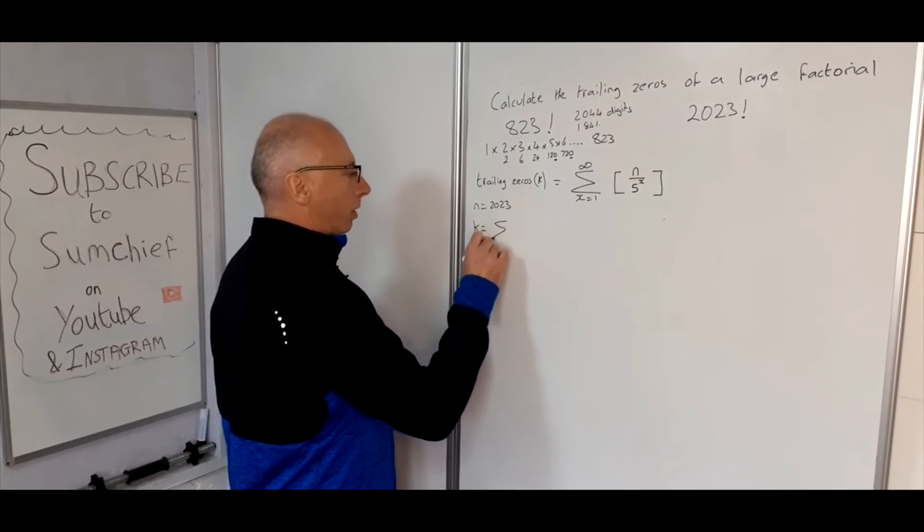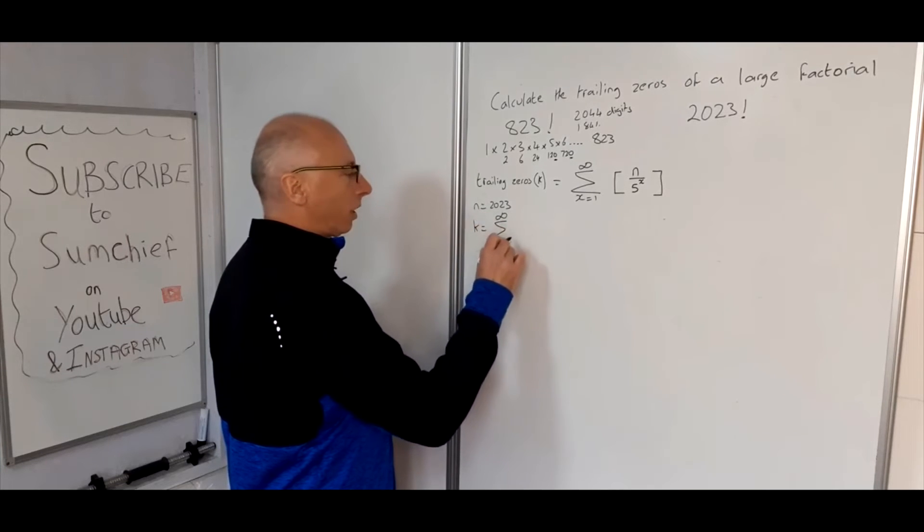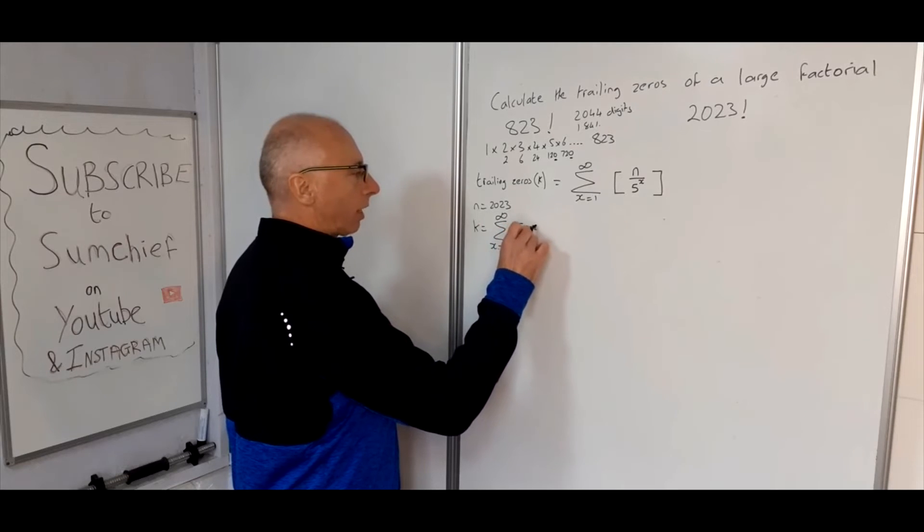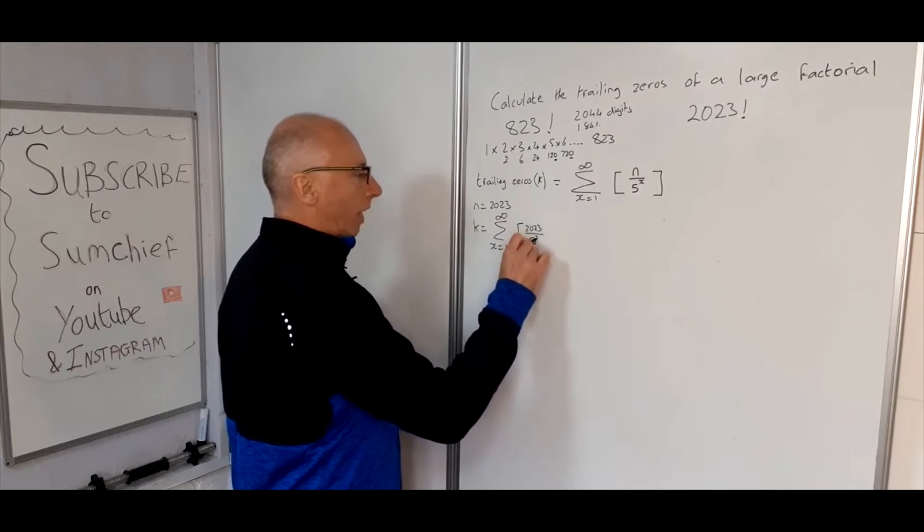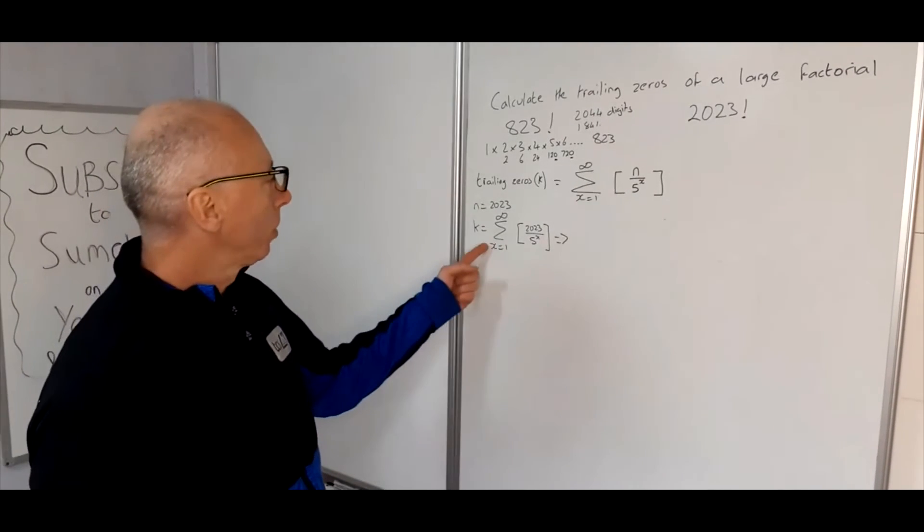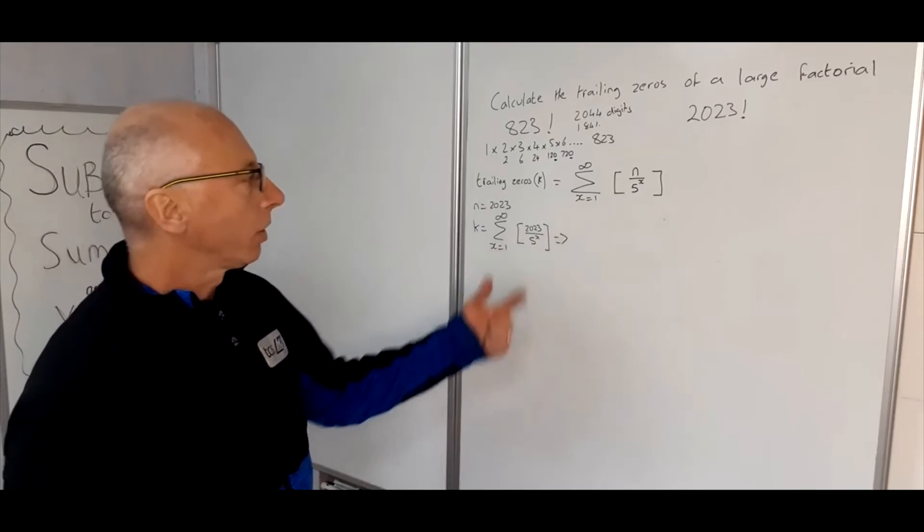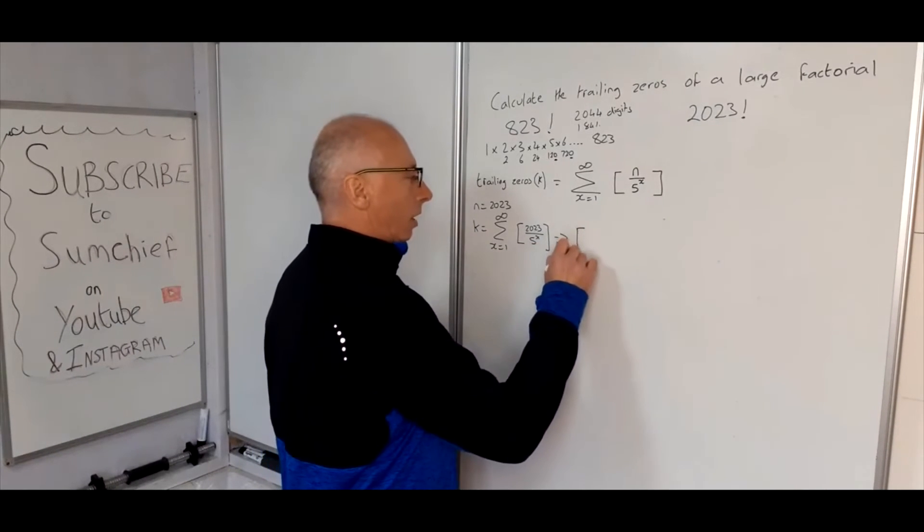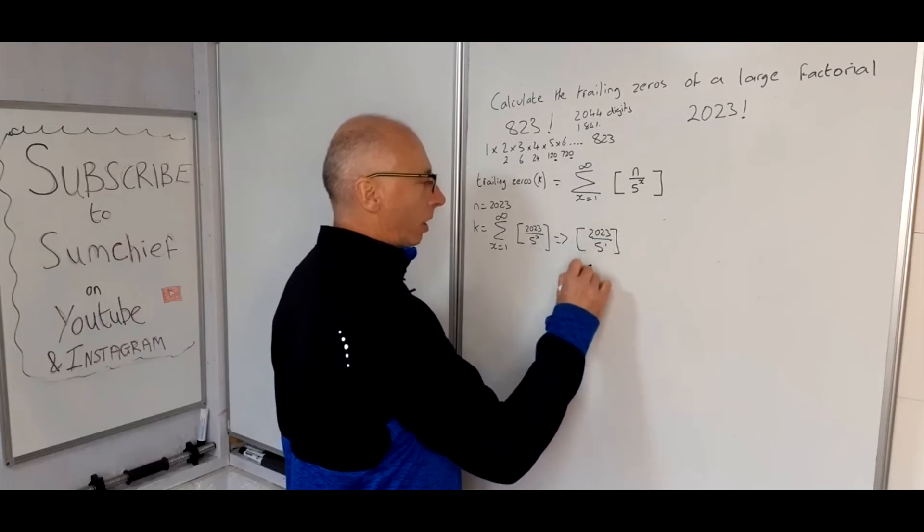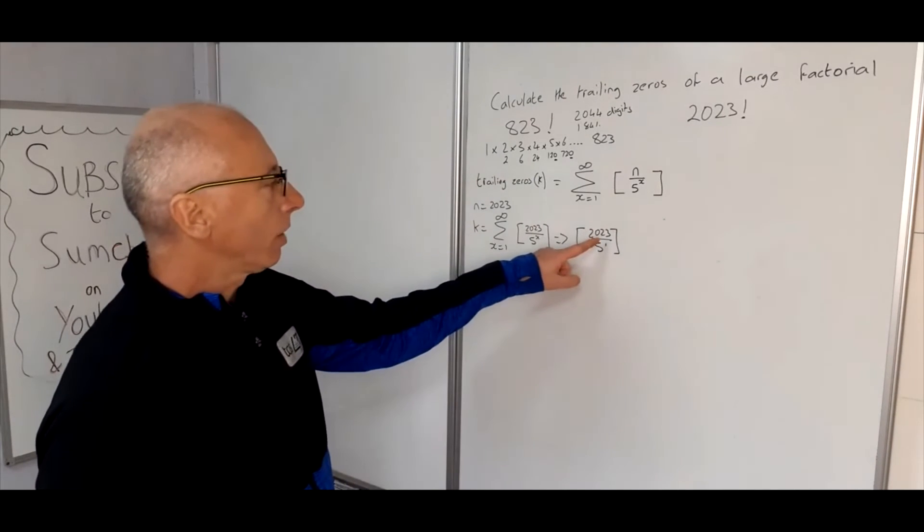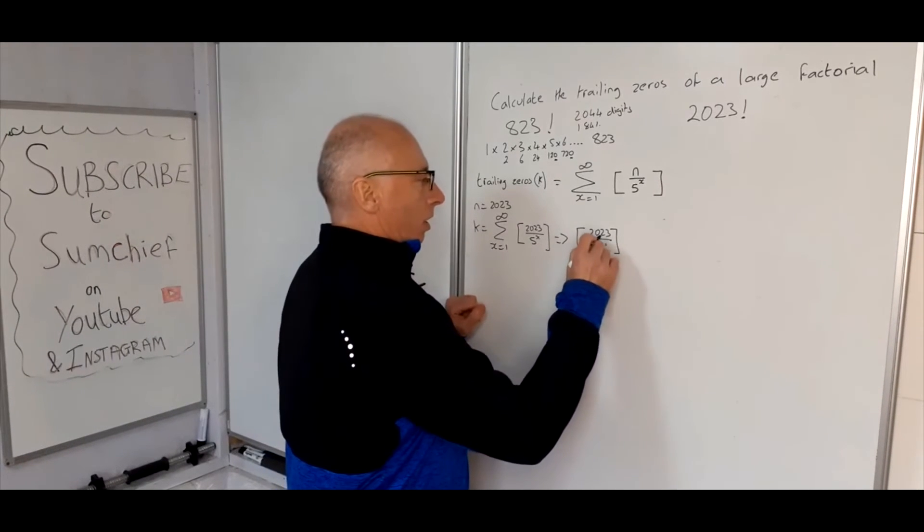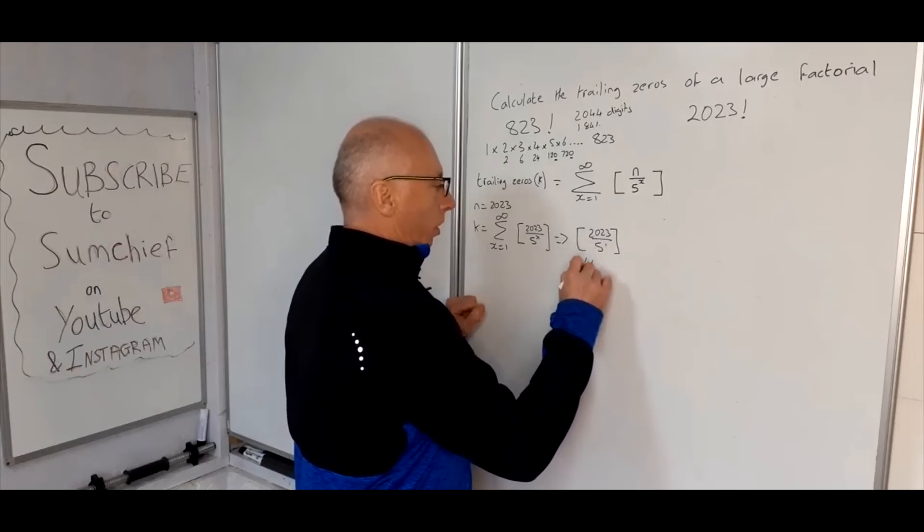Okay, so for 2023, now we've got our n equals 2023 for this formula. So then we want k equals the sum of x equals 1 to infinity of the greatest integer of 2023 divided by 5 to the x. So then this is going to lead us to, just go through x equals 1, 2, 3, 4, and so on. 2023 divided by 5 to the power of 1.